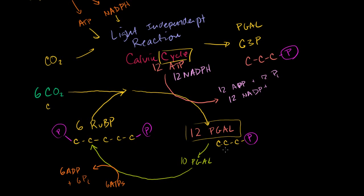Well, I only used 10 out of the 12. So I have two PGALs left. And these can then be used. And the reason why I used 6 and 6 is so that I get 12 here, and I get 2 here. And the reason why I have 2 here is because 2 PGALs can be used to make a glucose, which is a 6-carbon molecule. Its formula, we've seen it before, C6H12O6.